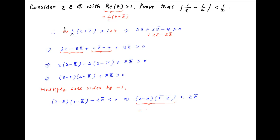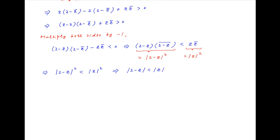Note that the left-hand side is equal to the square of the absolute value of (2 minus z), and the right-hand side is equal to the square of the absolute value of z. The given inequality therefore becomes the square of |2 minus z| is less than the square of |z|, which implies that |2 minus z| is less than |z|, because both |2 minus z| and |z| are positive numbers.